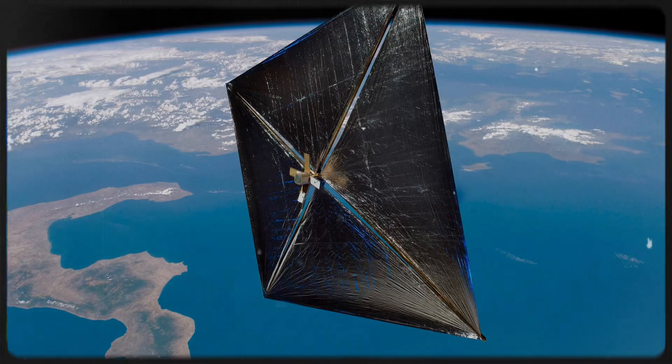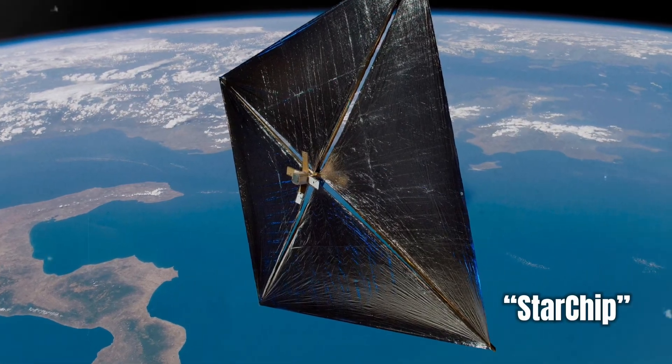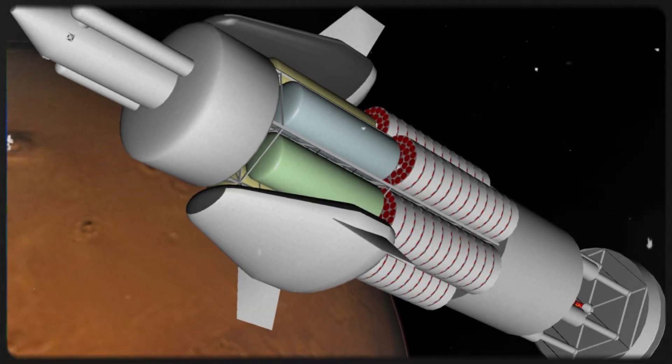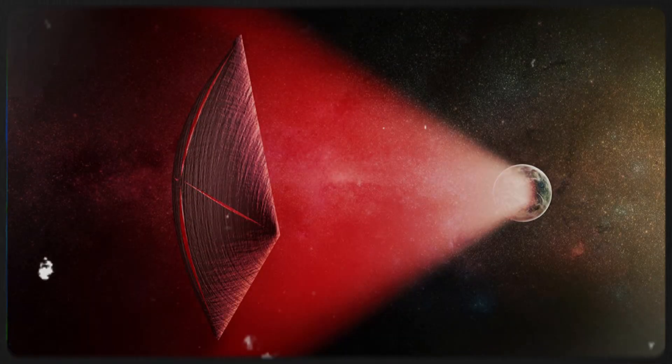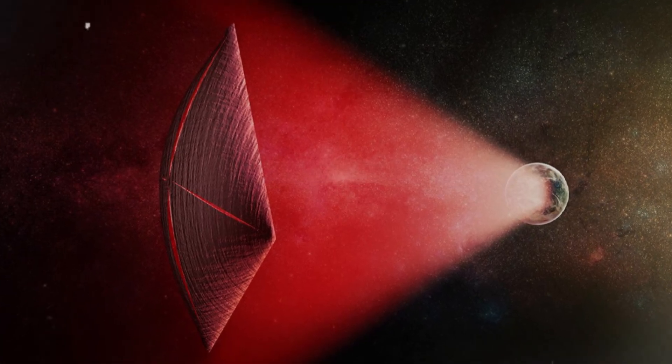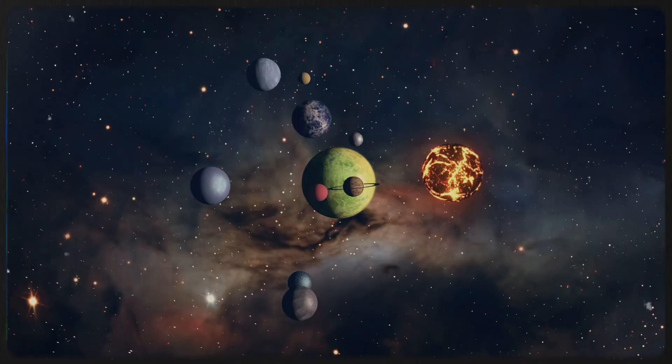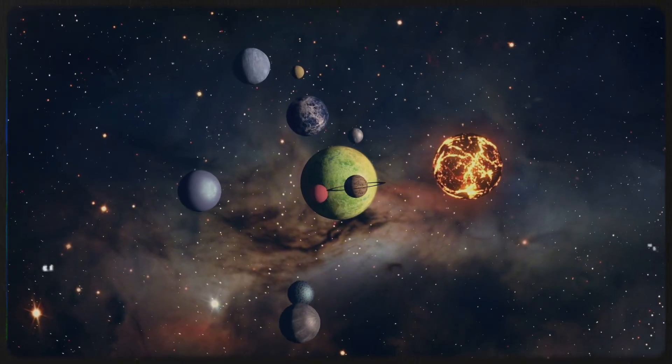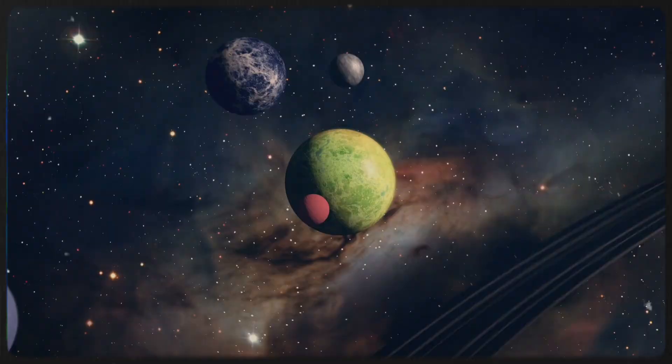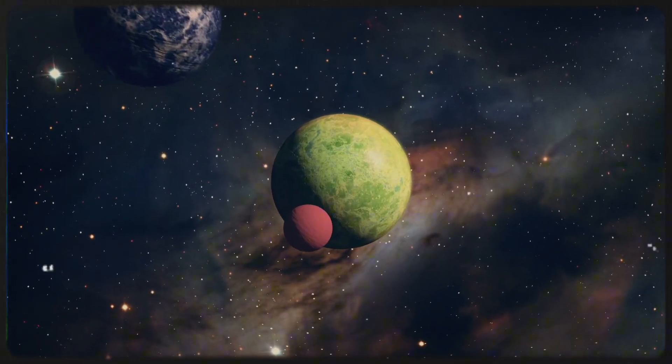Breakthrough Starshot's concept is both bold and groundbreaking. The initiative aims to send tiny, lightweight spacecraft, each no larger than a postage stamp, on an interstellar journey. These miniature probes, known as Starshots, would be propelled by high-powered lasers on Earth. Unlike conventional spacecraft that rely on chemical rockets, Starshots would use light sail technology, allowing them to reach extraordinary speeds, up to 20 percent the speed of light. At such velocities, the journey to Proxima Centauri, which would take tens of thousands of years with current propulsion methods, could be completed in just a few decades.